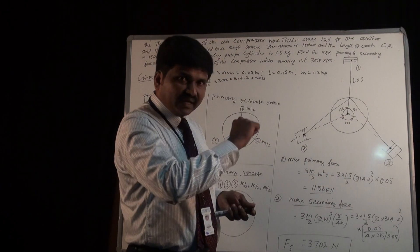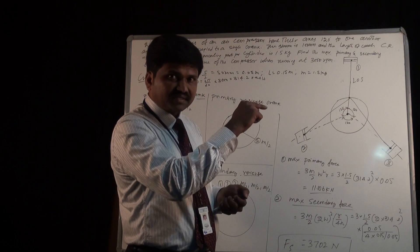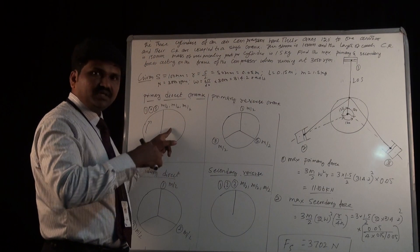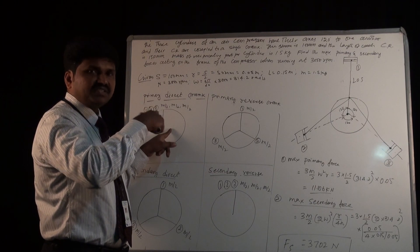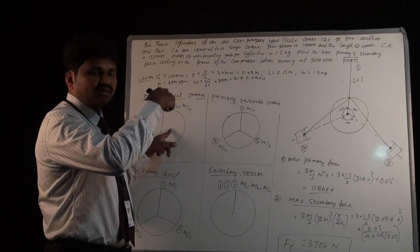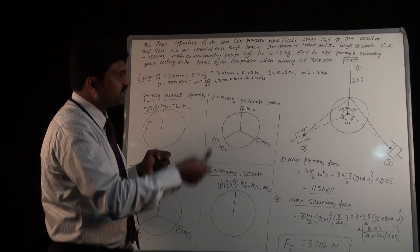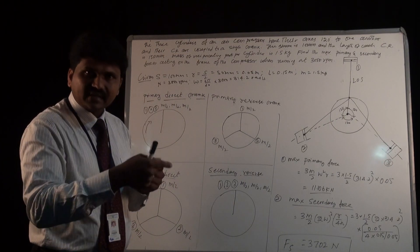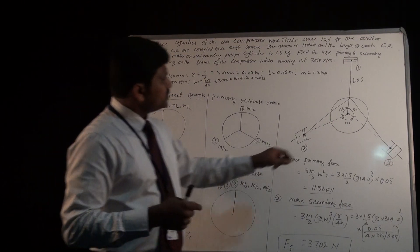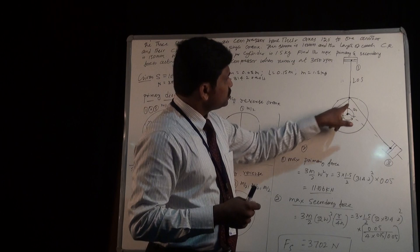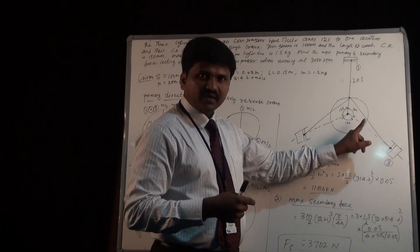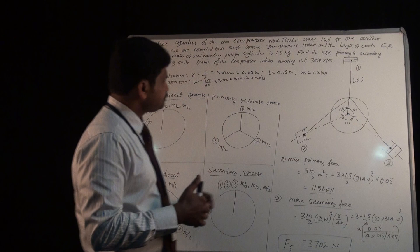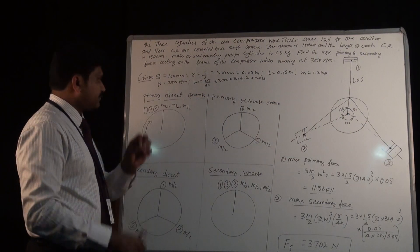Please remember: all the angles are being measured in the clockwise direction, because all the direct crank positions must be represented clockwise. All the reverse crank angles must be measured in the anticlockwise direction. So the direct cranks are at 0, 120, and 240 degrees, and the reverse cranks will be opposite — we will see how these sketches are drawn.